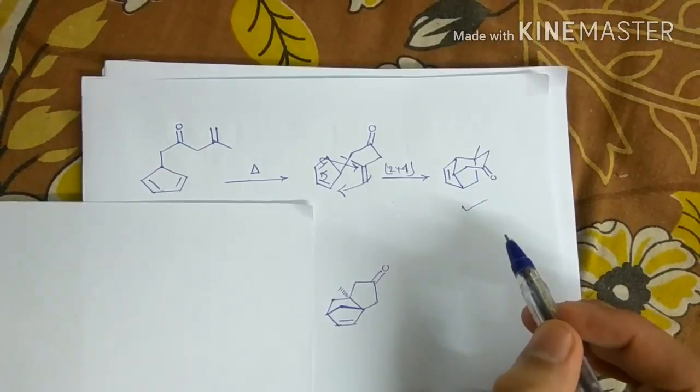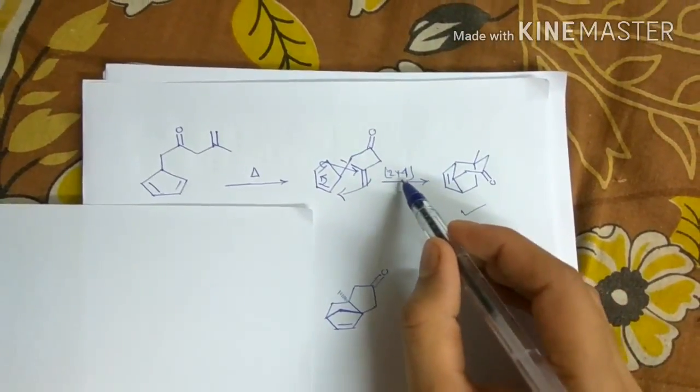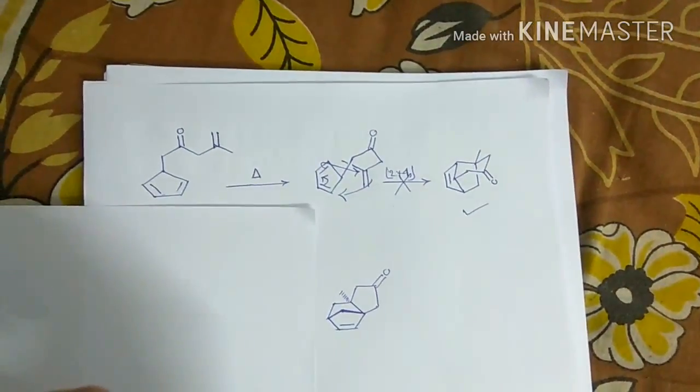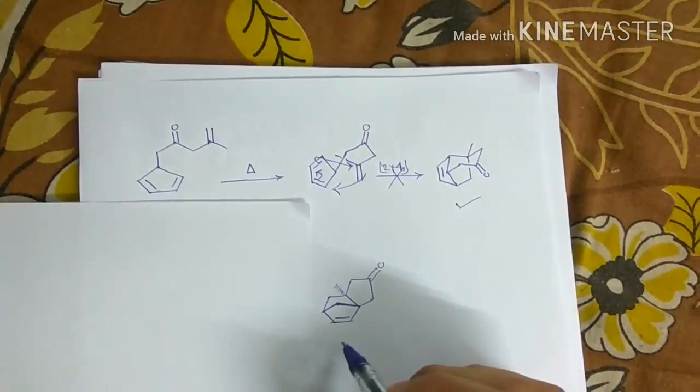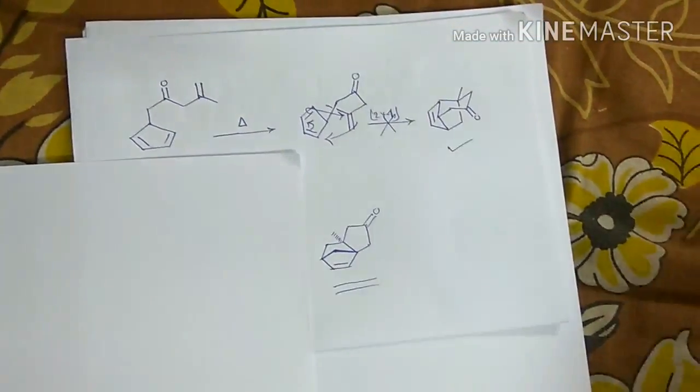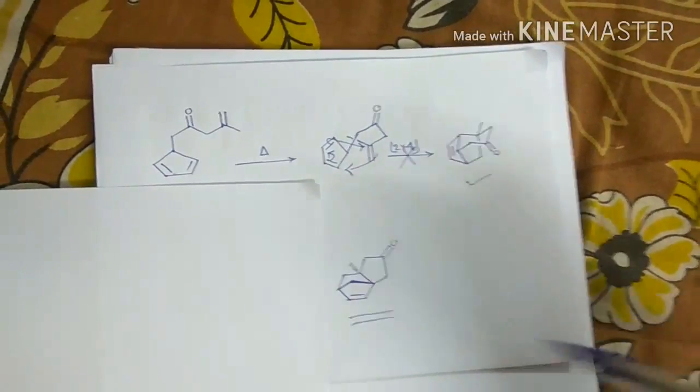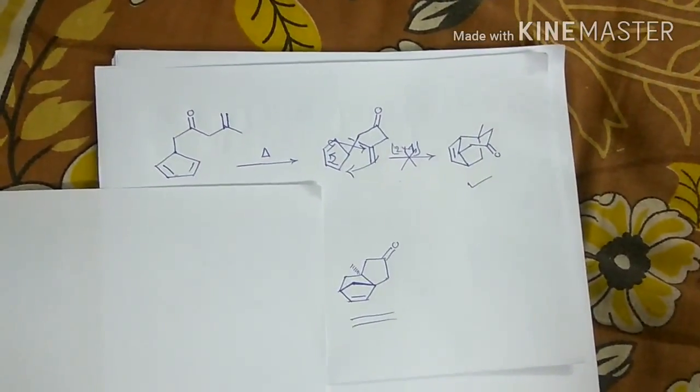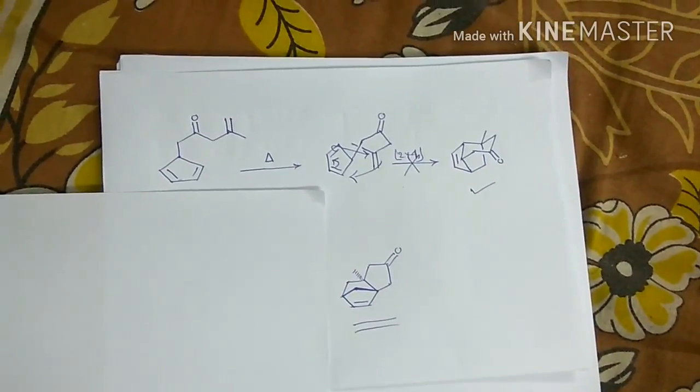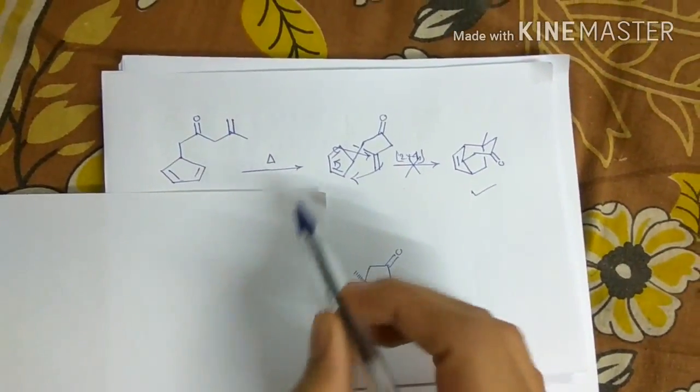But in reality we see that this reaction doesn't occur. Instead we get this product. So how this product formation can be explained. To explain this product formation we have to recall what we have just said, that there are two reactions possible.